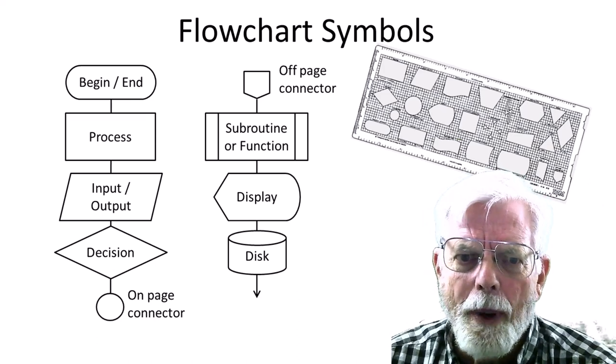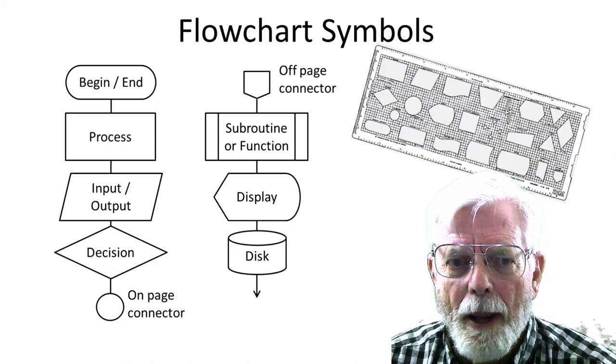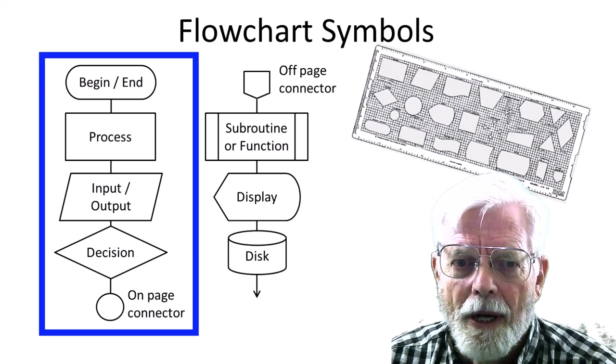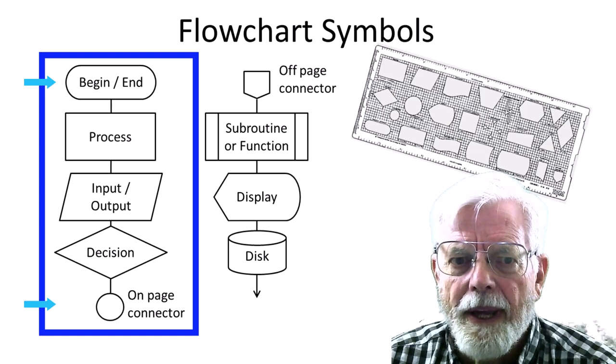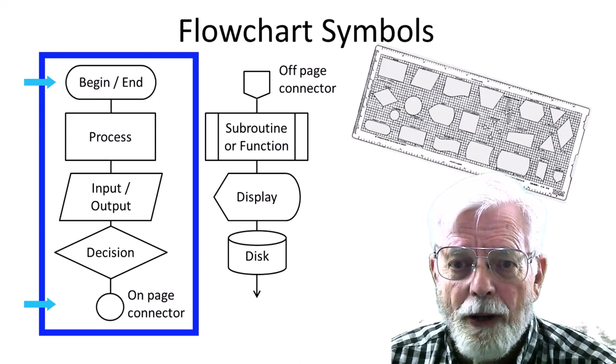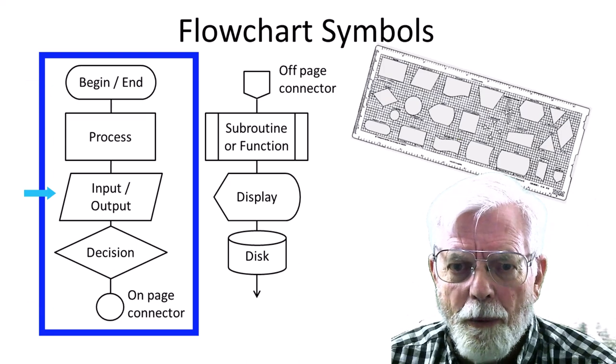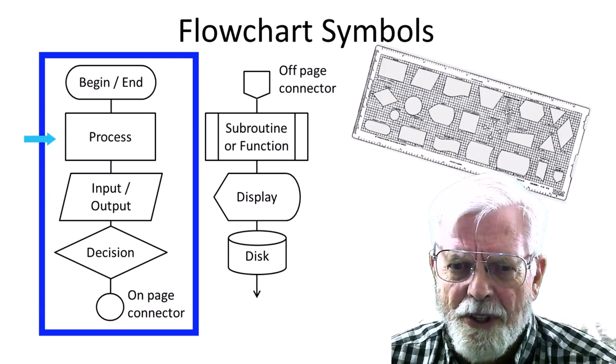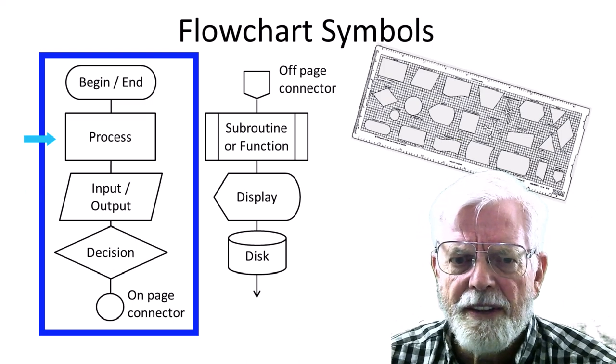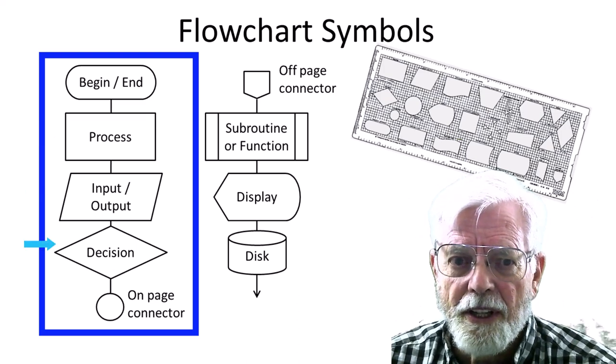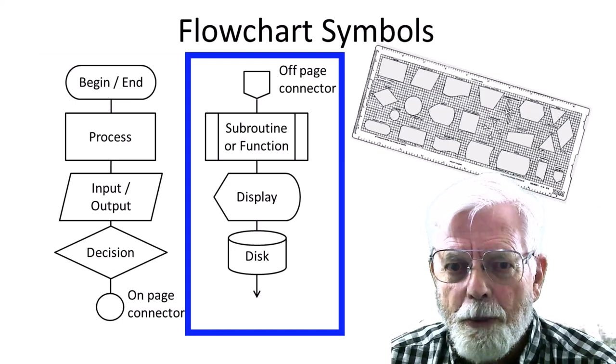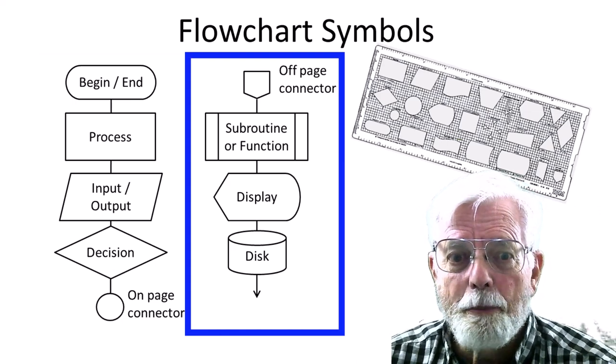Flowcharts are used to represent different steps of a program. The most commonly used symbols are those in the left column. A circle or rounded rectangle is used to indicate the beginning or end. The parallelogram is used for input or output. The rectangle represents some type of process, and the diamond is used to represent a decision. Other symbols can be used to represent subroutines, functions, disks, databases, etc.